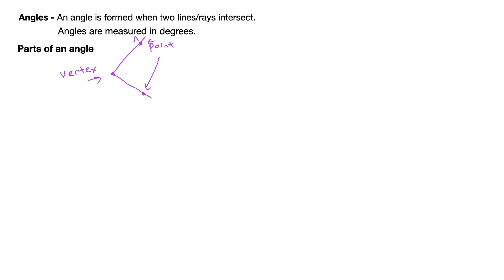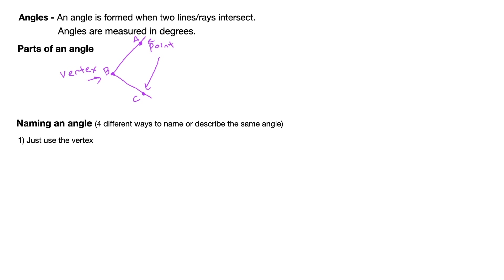Often you'll find letters next to each point — we might label them A, B, and C. When naming an angle, one way is to use just the vertex. If the vertex is point B, we could simply say angle B. Another way is to start at one point, go to the vertex, and go to another point — so the vertex is always the middle letter. That gives us angle A, B, C.